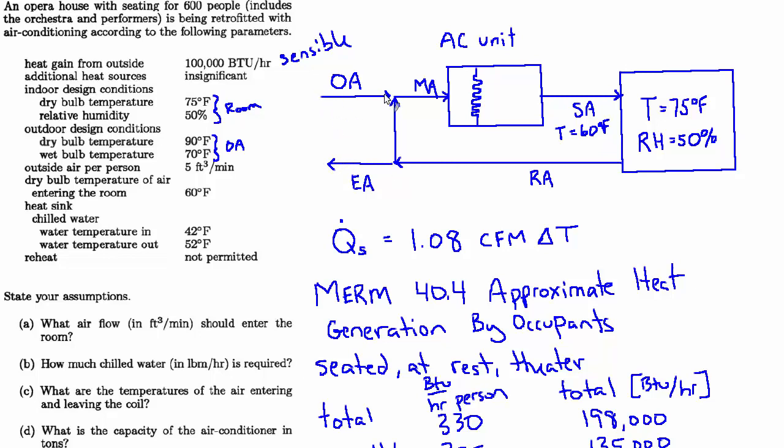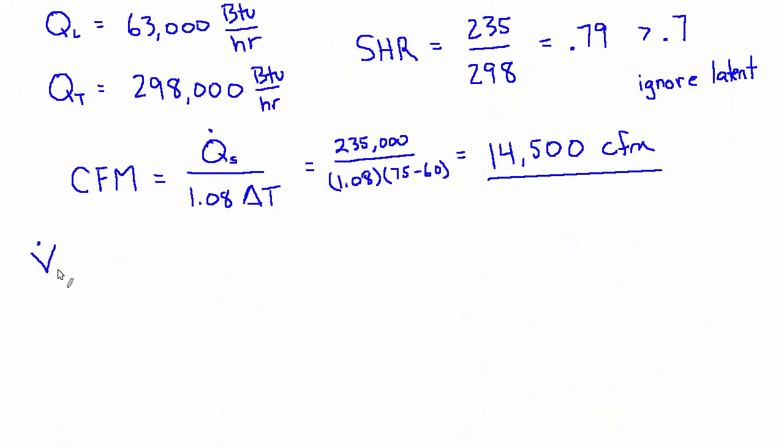Well, the same amount as whatever outside air is being introduced. Well, how much outside air is being introduced? 5 CFM per person, and there's 600 people. So the volume of outside air is 5 CFM per person times 600 people. So that's 3,000 CFM.